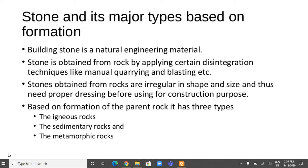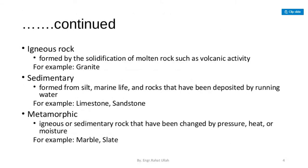Igneous rocks are formed by the solidification of molten rock such as volcanic activity, and the best example of igneous rock is granite.